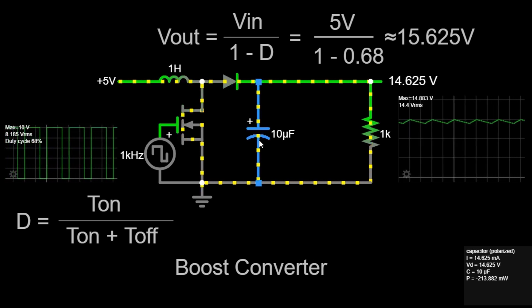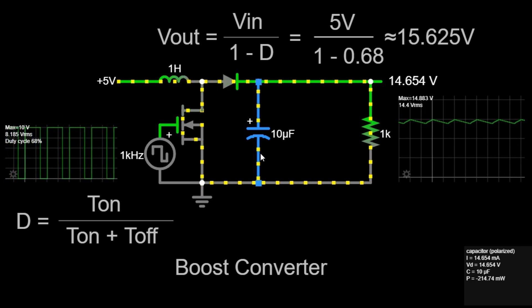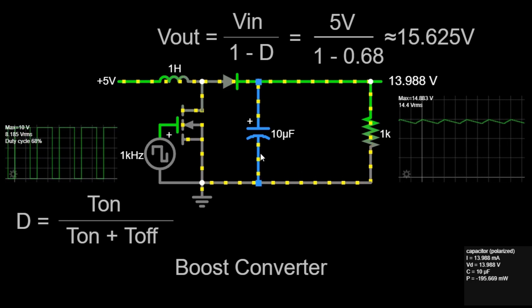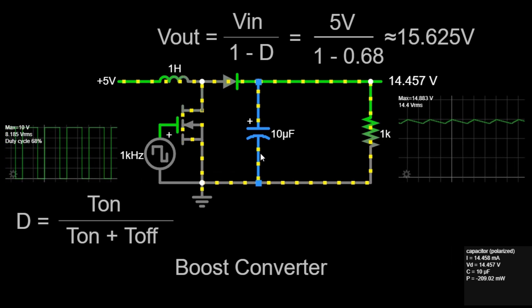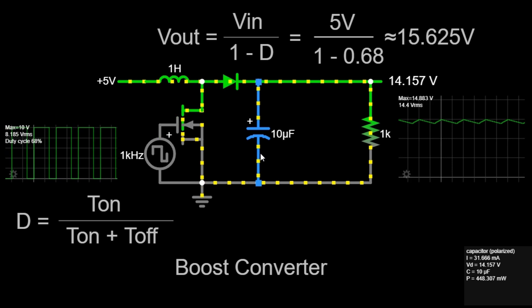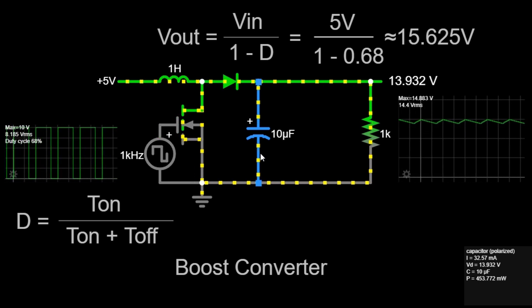Fifth, we have the capacitor, with a value of 10 µF. This component smoothens the output voltage by filtering out the ripples caused by the switching action. The capacitor stores and releases electrical energy, smoothing out voltage fluctuations to provide a more stable output voltage.